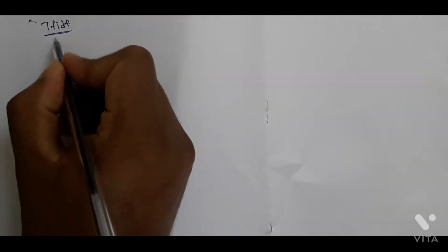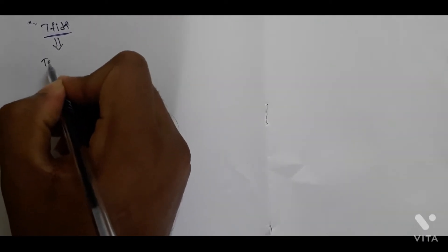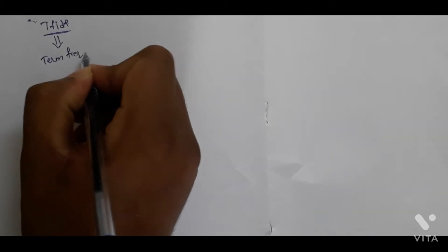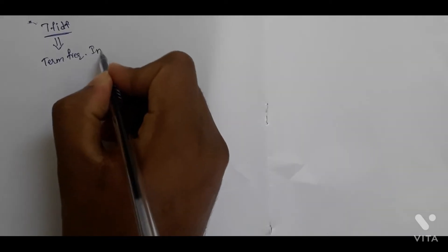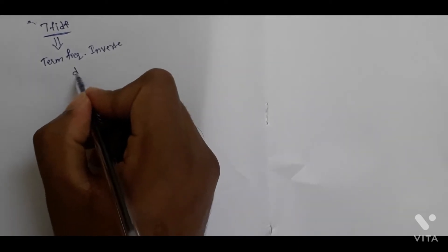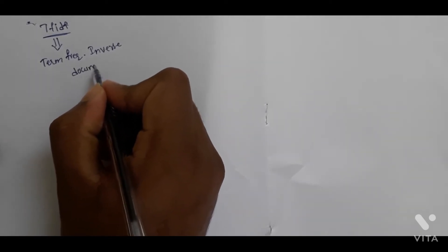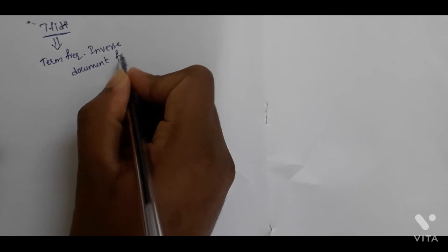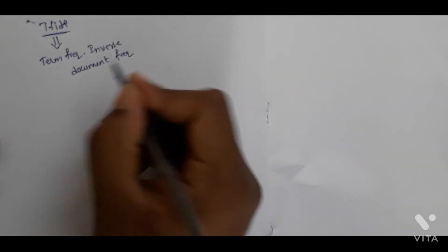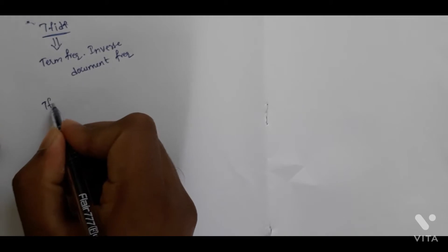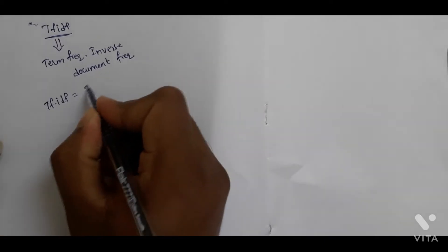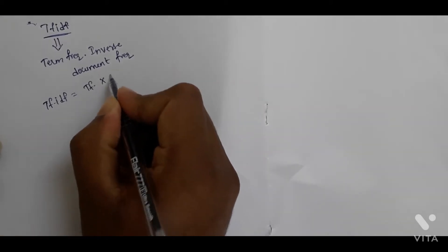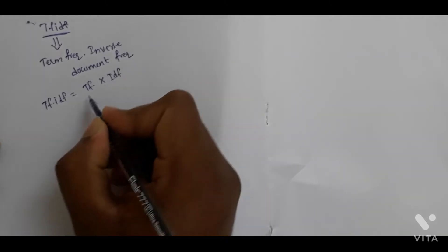First, we have the TF-IDF formula. Basically, TF-IDF stands for term frequency–inverse document frequency. The formula is: TF-IDF equals TF multiplied by IDF. Basically, TF is term frequency.